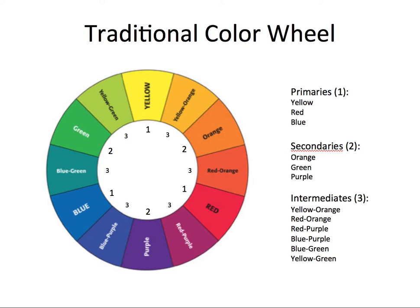Then we have what we call intermediates — sometimes referred to as tertiary colors, it means the same thing. Once we get our primaries and secondaries, the intermediates are pretty simple because it's just the name of the two colors next to it. The primary is said first. So in between yellow and orange, it's called yellow-orange; between orange and red, it's red-orange; between red and purple, it's red-purple; and then we have blue-purple, blue-green, and yellow-green. Those are our six intermediate hues.